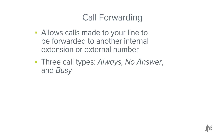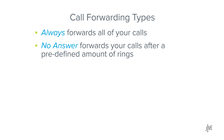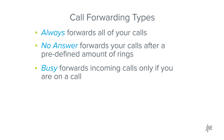There are three different types of call forwarding: Always, No Answer, and Busy. Always forwards all of your calls. No Answer forwards your calls after a predefined amount of rings. And Busy forwards incoming calls only if you are already on a call.